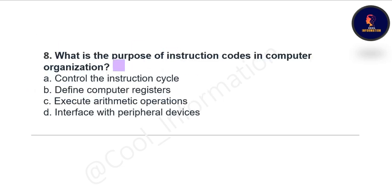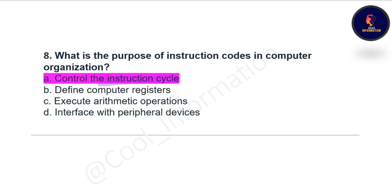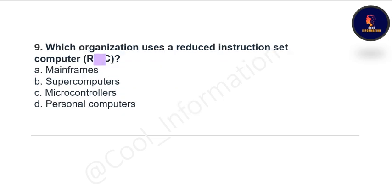Question 8: What is the purpose of instruction code in computer organization? Option A: control the instruction cycle, Option B: define computer registers, Option C: execute arithmetic operations, Option D: interface with peripheral devices. The correct option is control the instruction cycle.